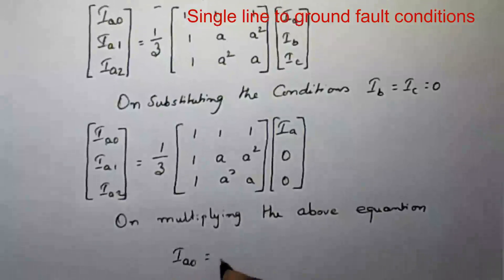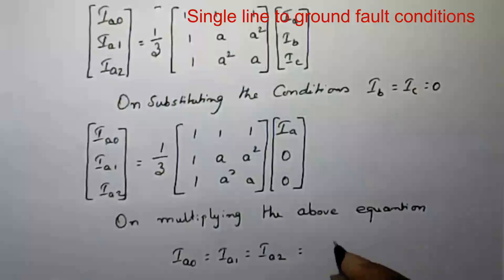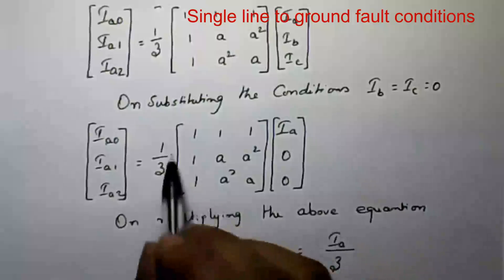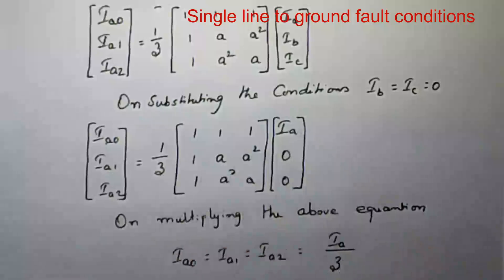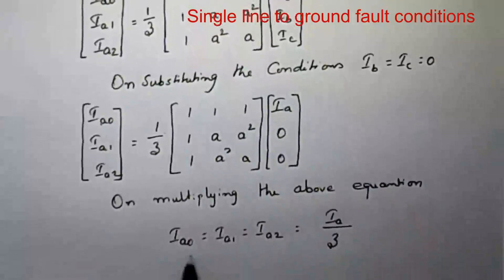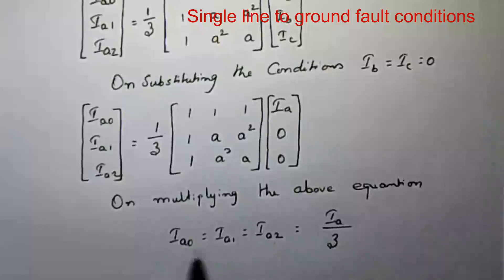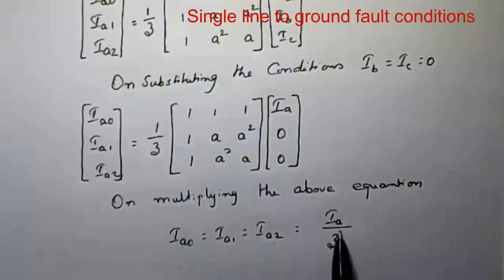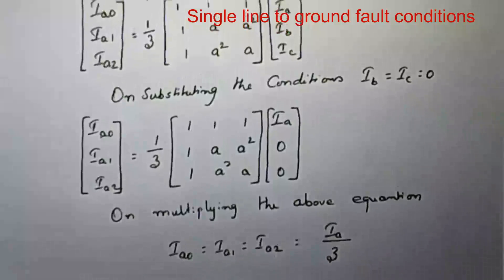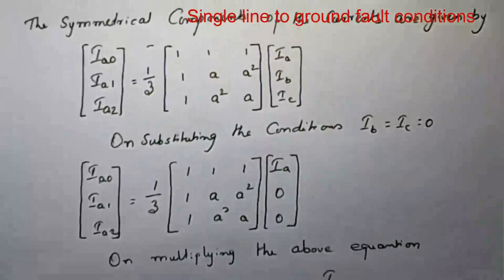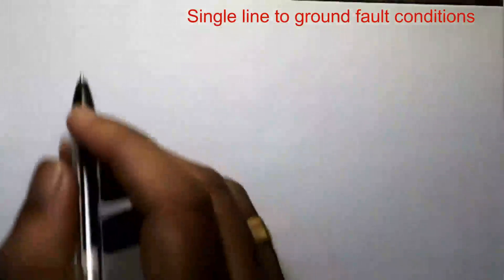Therefore, Ia0 = Ia1 = Ia2 = Ia/3. This gives us the key condition: in the case of a single line to ground fault, the positive sequence current is equal to the negative sequence current, which is equal to the zero sequence current, and that value is equal to Ia divided by three.